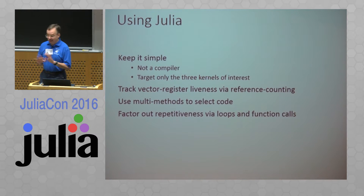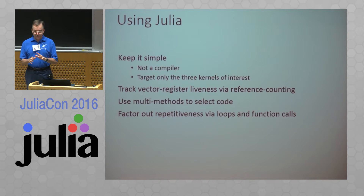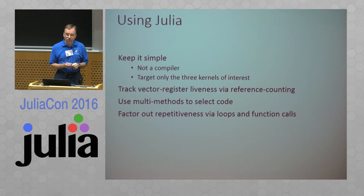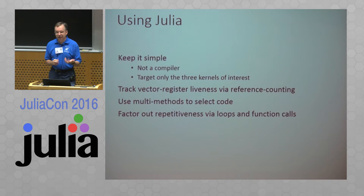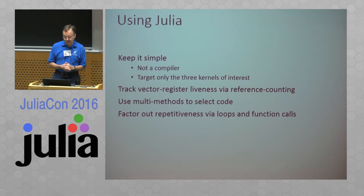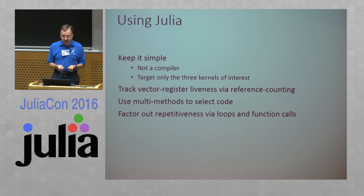This is not a compiler. It targets only three kernels of interest — I did not make any sort of general-purpose tool. I tracked the vector register pressure, used some reference counting, and used multi-methods to select the code. This is where Julia's multiple dispatch was really handy. And then I factored out repetitiveness with loops and function calls — that I could have done with a good macro assembler, but I haven't seen a macro assembler that has multi-methods.